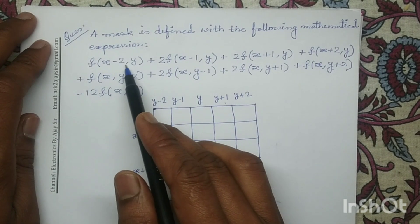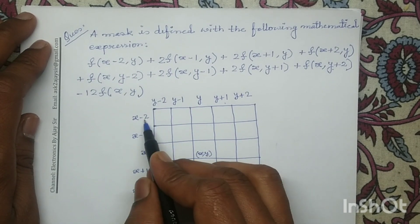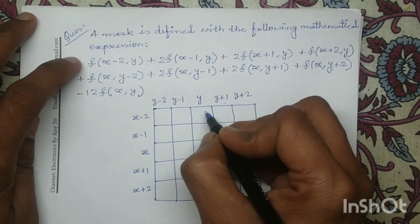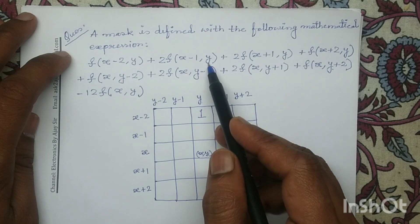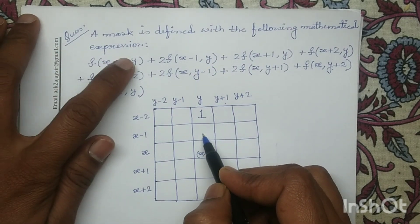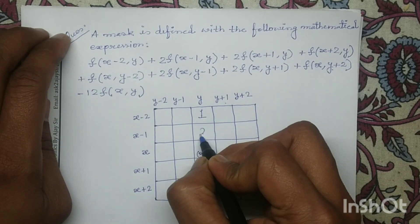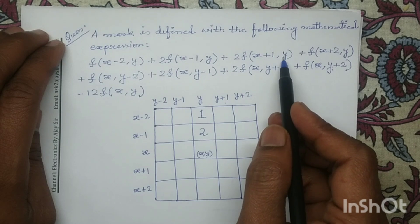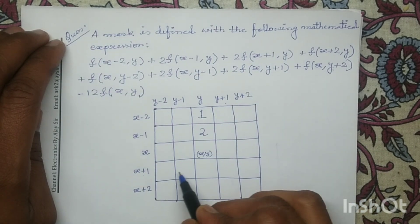For f(x-2, y), the coefficient is 1, so I will write 1 here. Next, f(x-1, y) represents this pixel and the coefficient in this term is 2, so I will write 2 here. Next, f(x+1, y) — the coefficient is 2 here, representing this pixel, and the coefficient is 2.